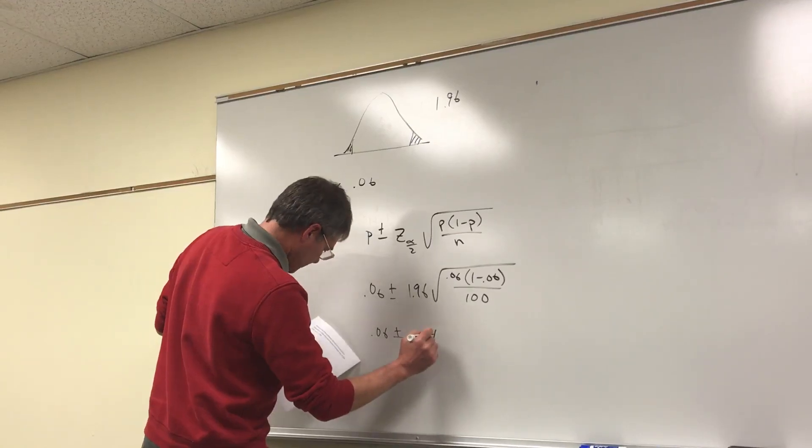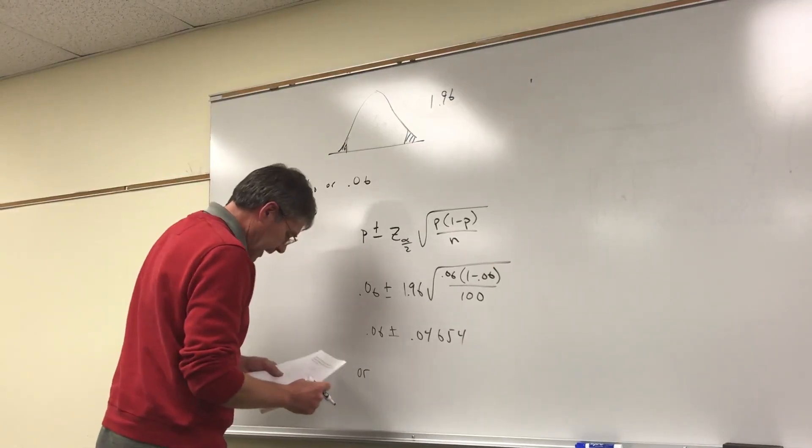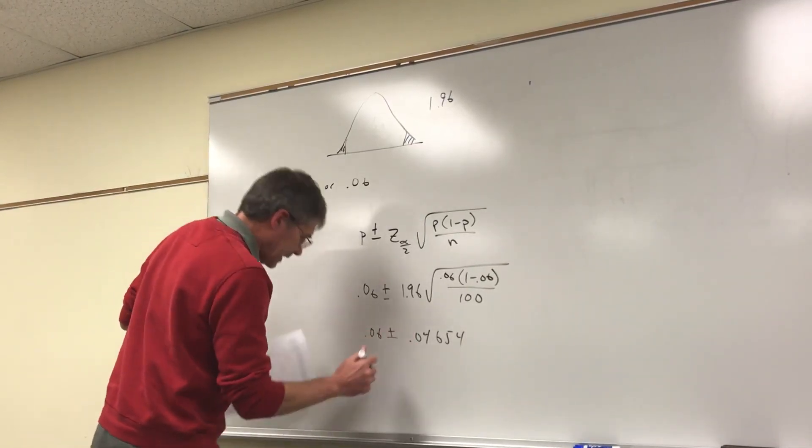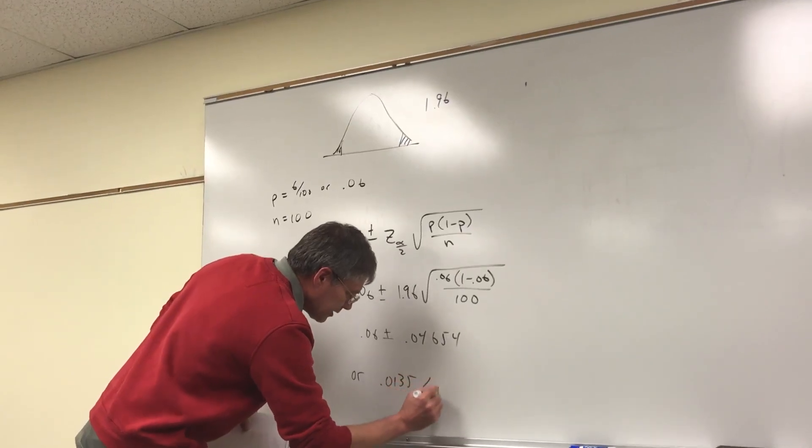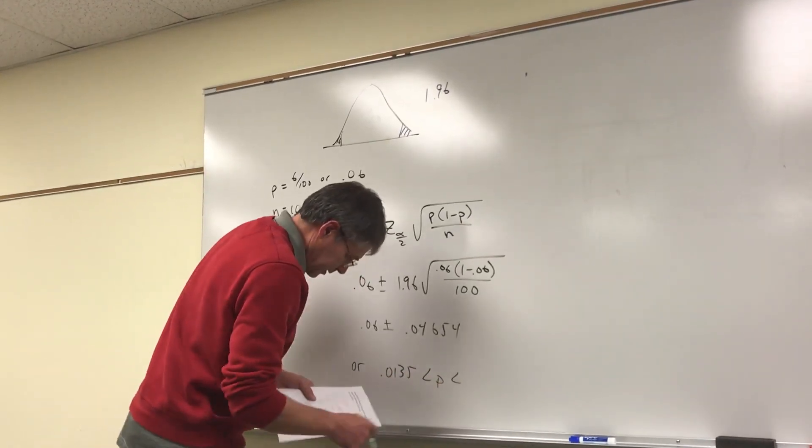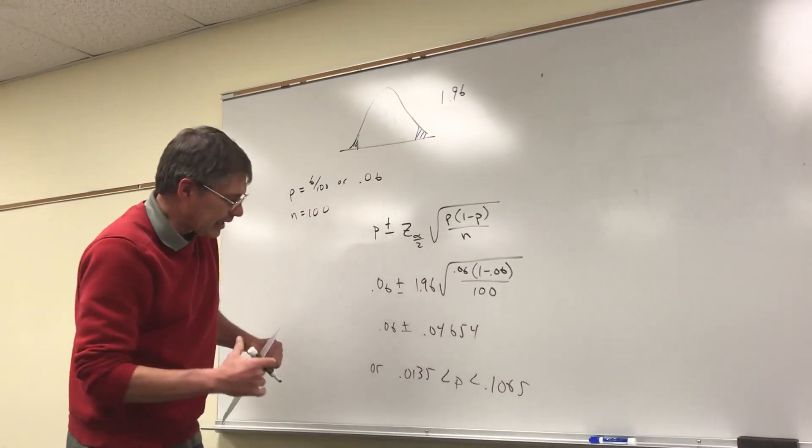Now what this means is that I can be 95% confident that the actual proportion, based on this 100-piece sample, is somewhere between 0.0135 and 0.1065.